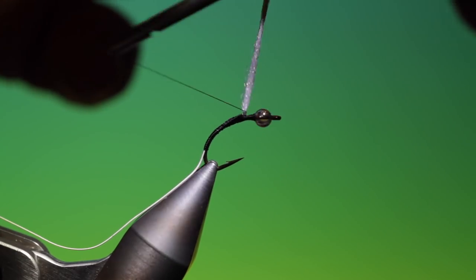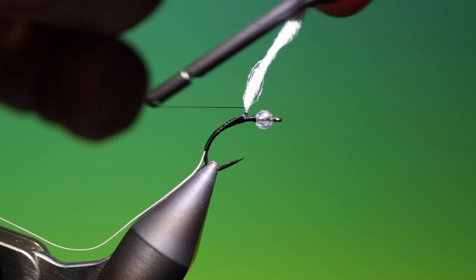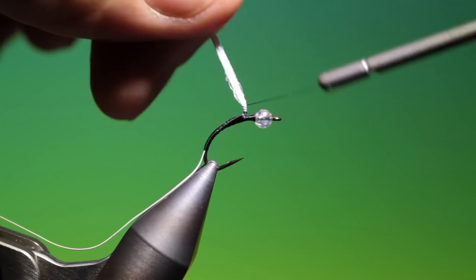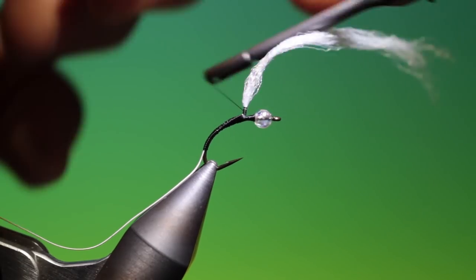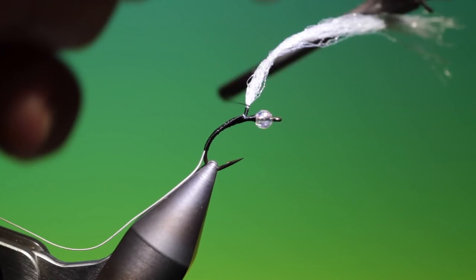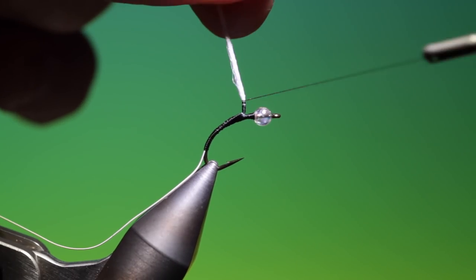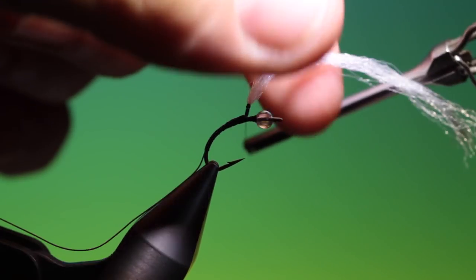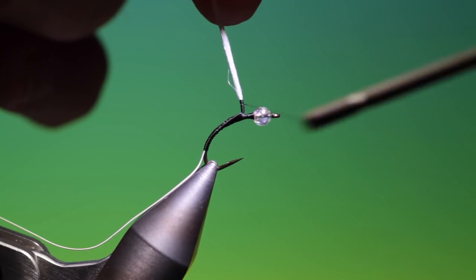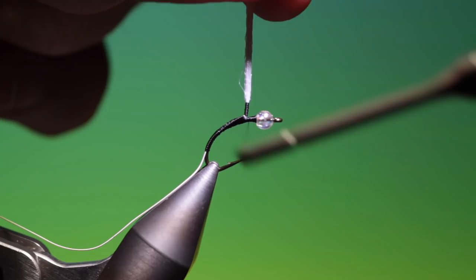That'll do it. Now we'll go up here and make a few wraps around the post just to strengthen it for when we put the hackle on. We have to go a little bit higher here because we want the peacock herl thorax to go in there. That'll do us, and go back down.